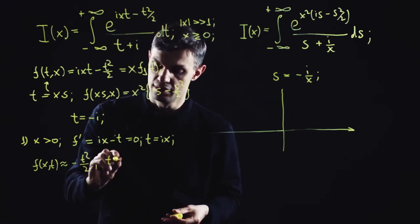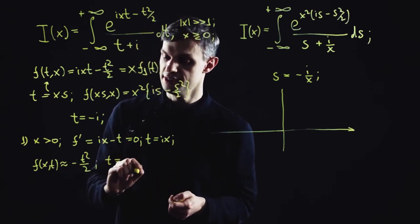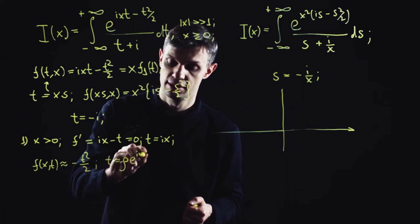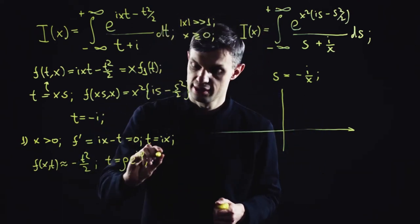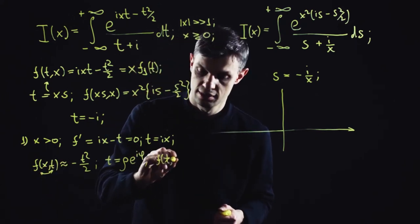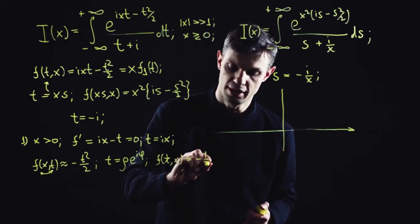So in order to extract these regions, let's decompose our t complex variable into the modulus and the argument. So now our exponent function is as follows.